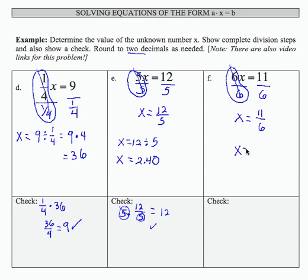If I divide 11 by 6, I'm going to need to round to get to two places. That means x equals 1.83.